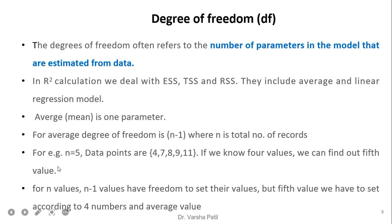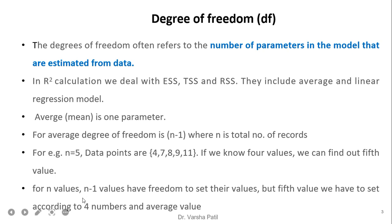For average, degree of freedom is n-1, where n is the total number of records. We can easily understand why: for example, if total n equals 5 and the values are 4, 7, 8, 9, 11 — if we know 4 values, we can find out the 5th value if we know the average. So we have degree of freedom n-1. It indicates that there is freedom for 4 values to be set, but the 5th value must be set according to those 4 numbers and the average value.